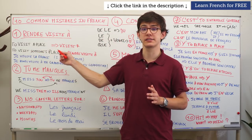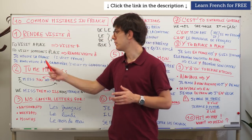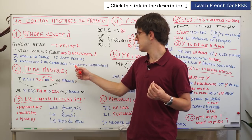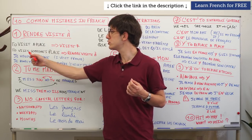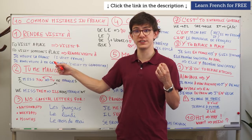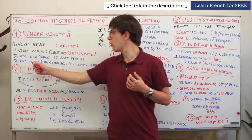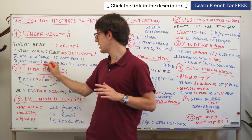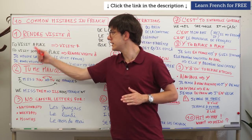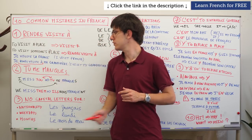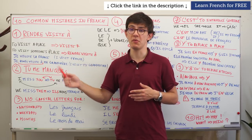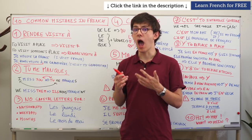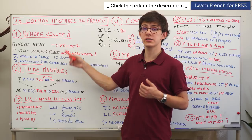But when you visit someone's place, it's more complicated — though not really, because you just use the expression 'rendre visite à.' So instead of visiter, you use rendre visite à. For example, 'I visit my grandmother' becomes je rends visite à ma grand-mère. You just need to remember that visiting a person requires rendre visite à.